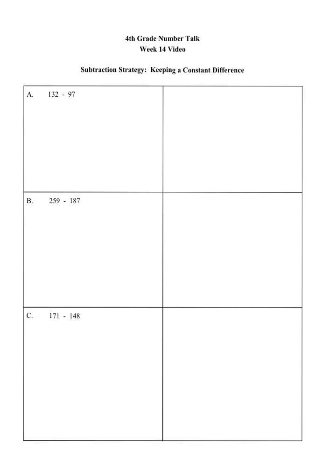So in this situation, we're going to impact the minuend, which is 132. We're going to subtract two from that to work with 130. So as long as we do the same thing with the subtrahend, we subtract two, the difference stays constant. And we can look at the answer and say, oh, that's 35.